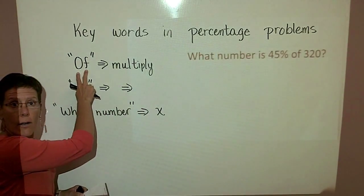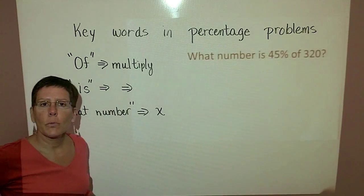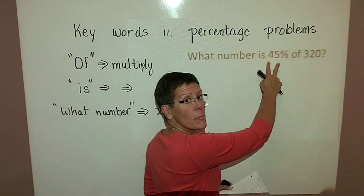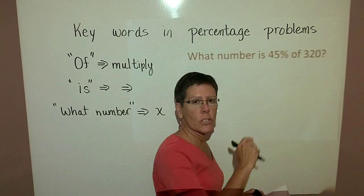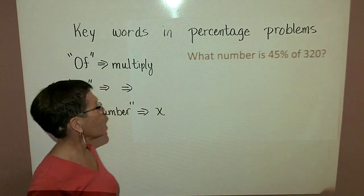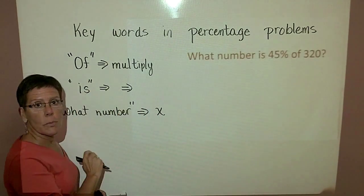The first word is the word 'of', and in mathematics when we say, let's take 45% of 320, we mean to multiply. So of means to multiply.